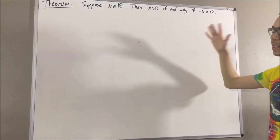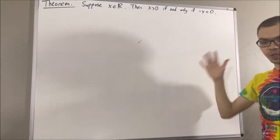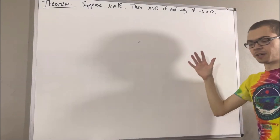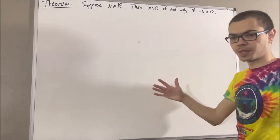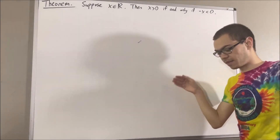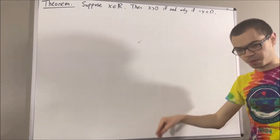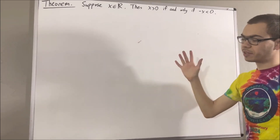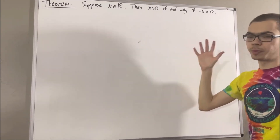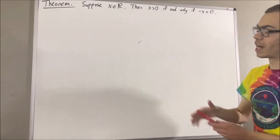Now, in this series, we are using a list of axioms for the real number system, and I'll leave that list of axioms in the description below. In this video, we are going to be using the following axiom.